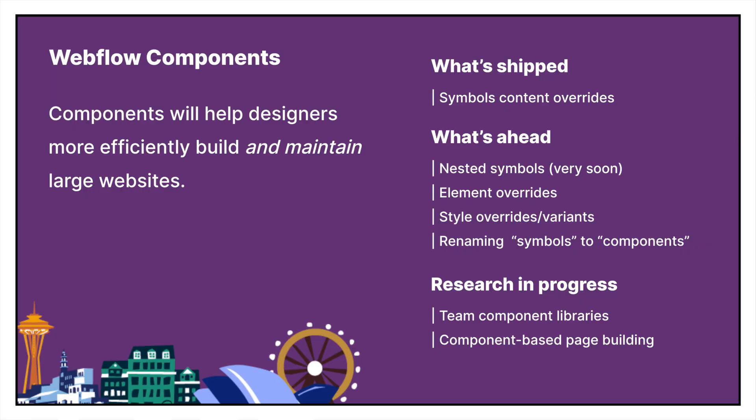Another big thing they talked about was components. Symbols is actually turning into components and they're going to make it so you can do quite a lot of things. They already have content overrides — for example, you can have a button as a symbol and override the text and link. But they're going to make it even more powerful. Inside a component, you'll be able to have nested symbols, and style overrides are coming, so you can change the background color without having to detach the symbol.